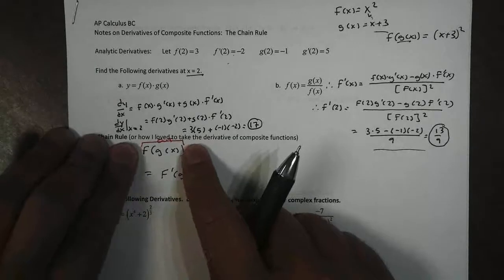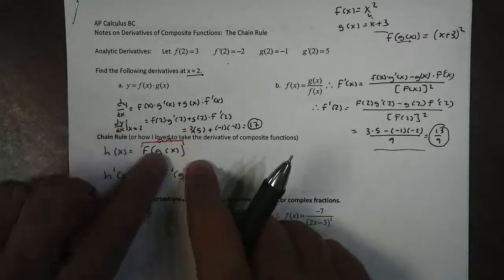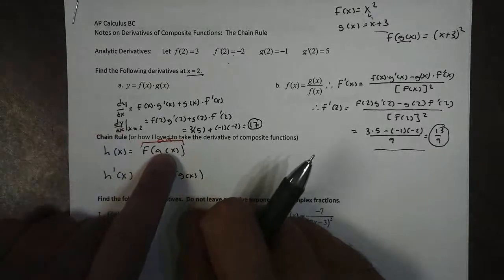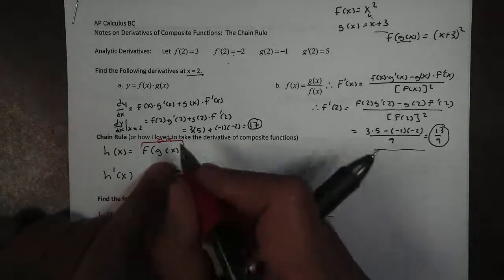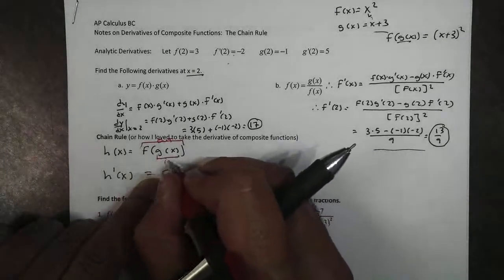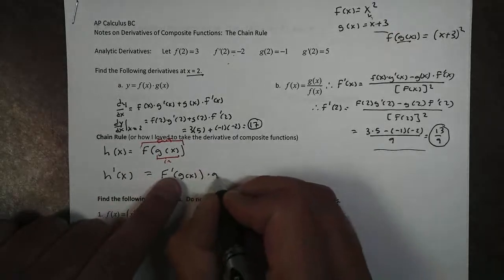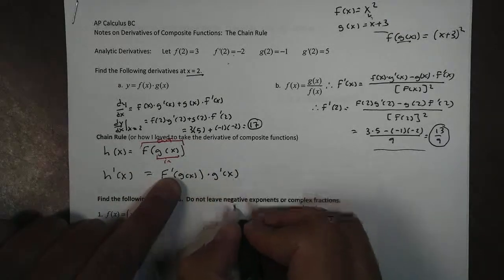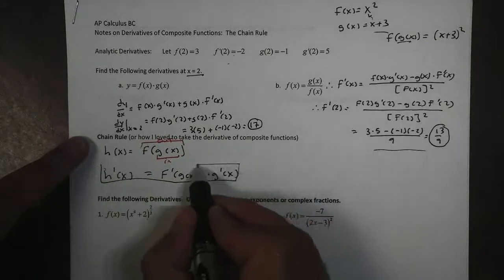Think of it like a Tootsie Roll pop. You eat the outside of the Tootsie Roll pop first, the candy shell, where the inside, the Tootsie Roll part, is still not being eaten yet. So that stays safe on the inside. But once that candy shell is gone, then we get to the inside part of our Tootsie Roll. And then we take the derivative of g(x), so we get g'(x). And that's our chain rule.